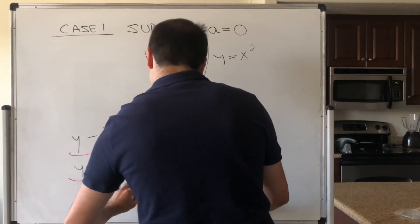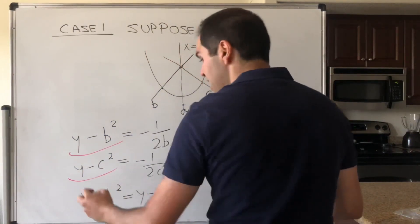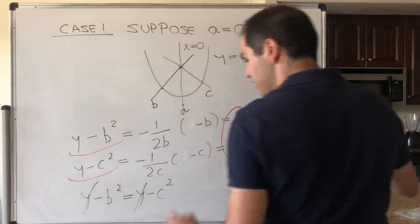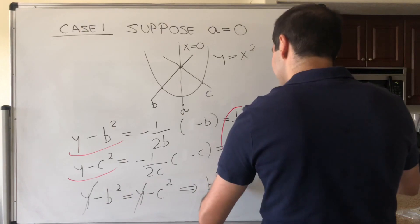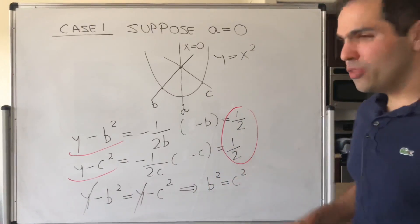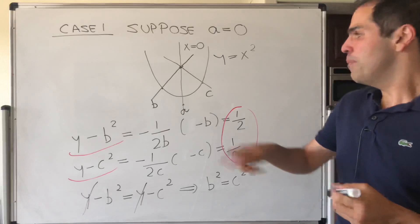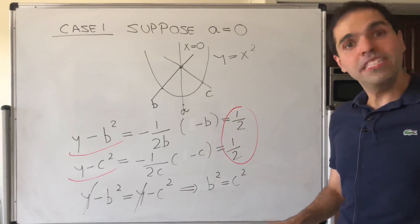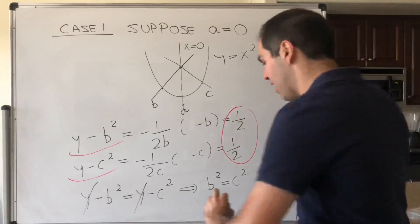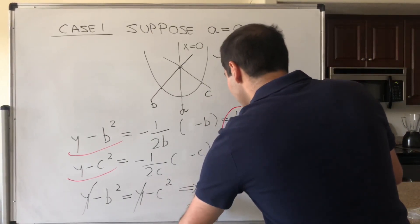what we get is that y minus b squared equals y minus c squared. So y minus b squared equals y minus c squared, and then you can solve for this. So what we get is that b squared equals c squared. Now you might say that b equals c, but remember we assume it's distinct. So actually, we don't have b equals c, but the other way, namely, b equals minus c.